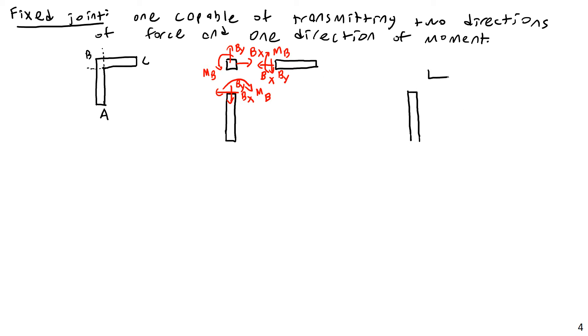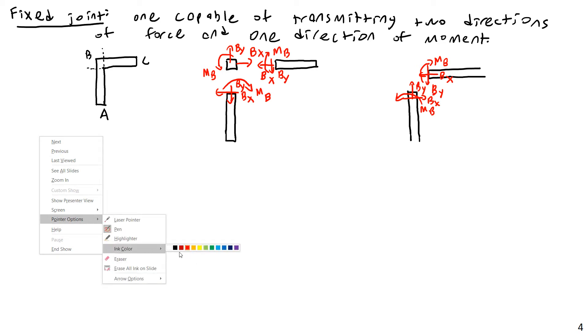You would set it up this way if you were actually modeling the joint as its own discrete thing. Often we don't do that, especially for simpler frames. I'll just show one member directly connecting to another. That is what a fixed joint is going to do - transmit force in both the X direction, the Y direction, and also some sort of moment.